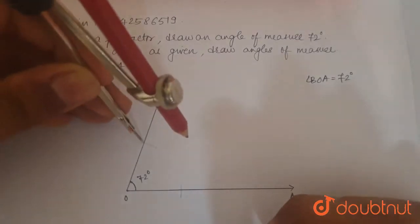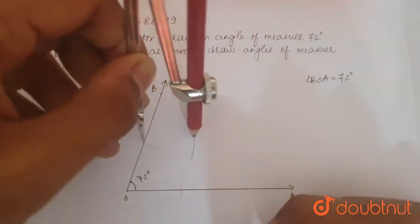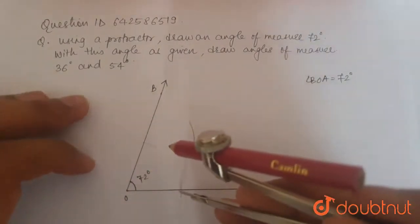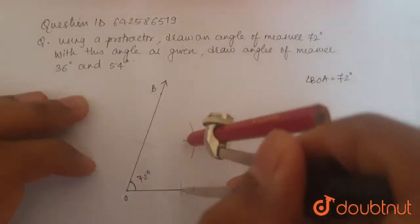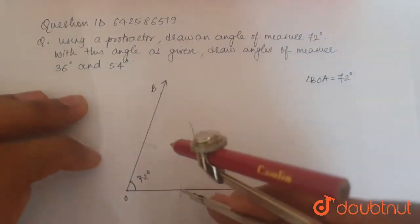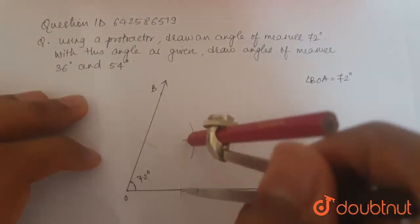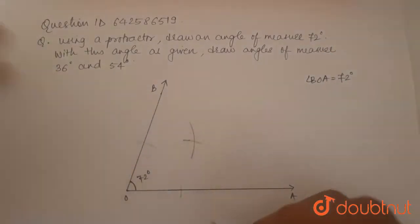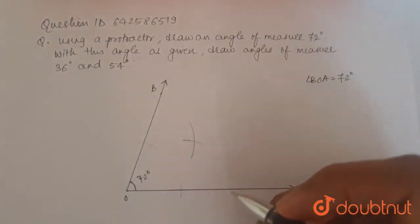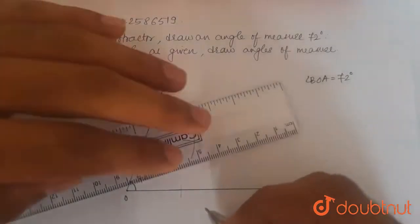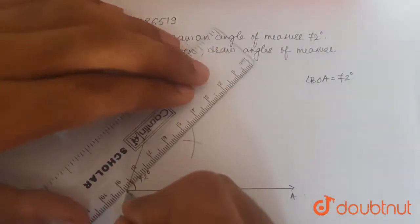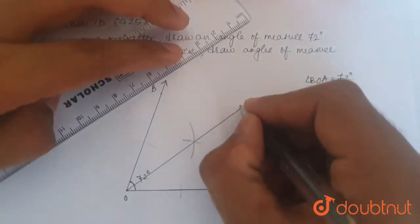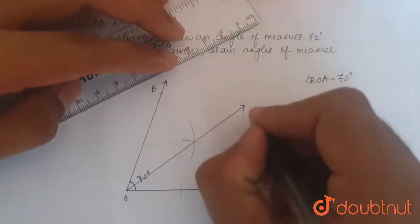And then we make two more arcs that would intersect somewhere here in between. And then we join point O and the intersection of these two arcs. Let's call this C.